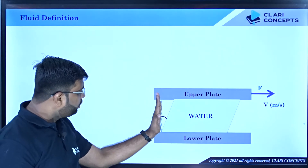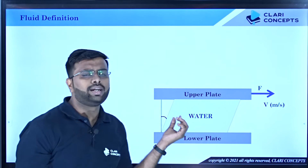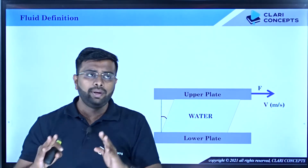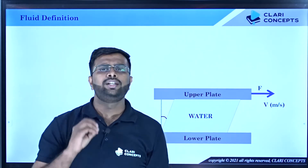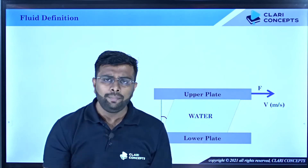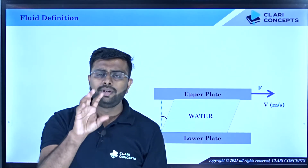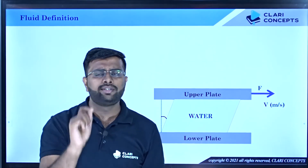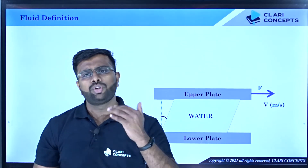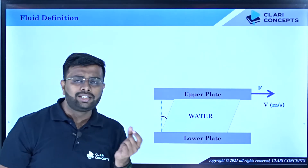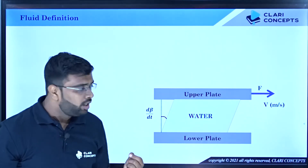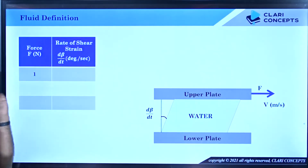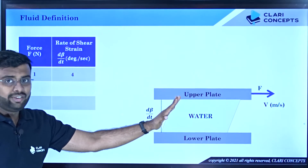The angle will continuously change. To understand this continuous motion, I break it into a time frame — what happens in one second. Just like a 20-watt bulb consumes 20 joules per second continuously, when motion is continuous I check the rate of change of angle, d-beta by d-t. With 1 Newton of force, the rate of change of angle is, say, 4 degrees per second — continuously deforming without stopping.